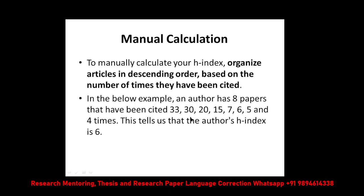The author has eight papers. The first paper has 33 citations, next 30, then 25, 7, 6, 5, 5, and 4. Among these eight publications with these different citation counts, the author's H-index is 6. Because six papers — with 33, 30, 25, 7, 6 citations — have each been cited at least 6 times. That is why the H-index is 6.